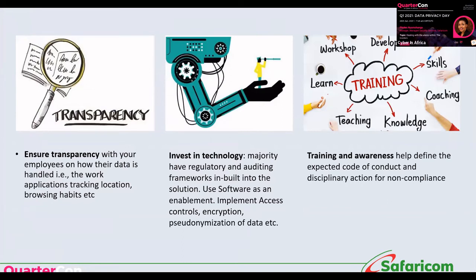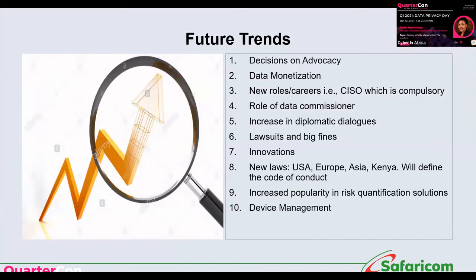To finish, some other things organizations should take into perspective: transparency — ensure employees know how their data is being handled, for example whether you're tracking their location or browsing habits through work applications. Be open so you don't get pushback from employees resistant to new solutions. Invest in technology — use software and technology as an enabler; implement things like access control and encryption. And training and awareness is the most basic — from physical to logical security.